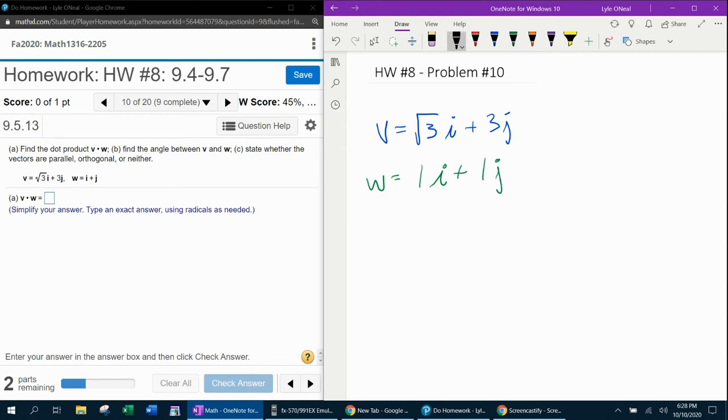When it says find the dot product, you want to stack these vectors one on top of the other. To find the dot product, multiply the coefficients of i together: √3 times 1 is √3. And the coefficients of j get multiplied: 3 times 1 is positive 3.